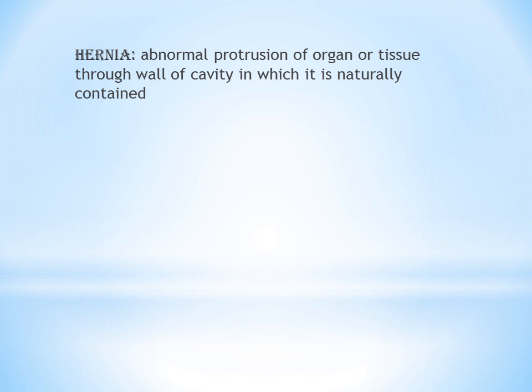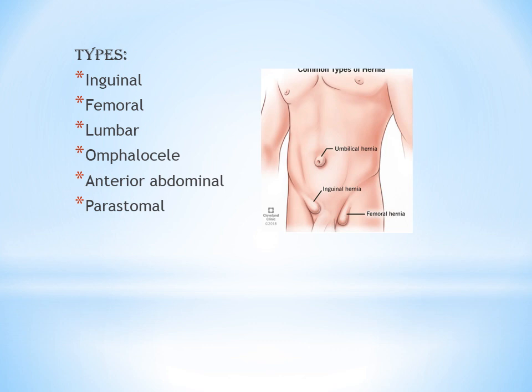Before moving to the codes, let's first understand what a hernia is. Hernia is the abnormal protrusion or bulging of an organ or tissue through the walls of the cavity in which it is naturally contained — in other words, an abnormal bulging through the weaker muscles or weaker spaces of the body.